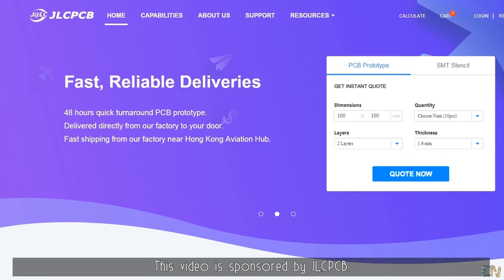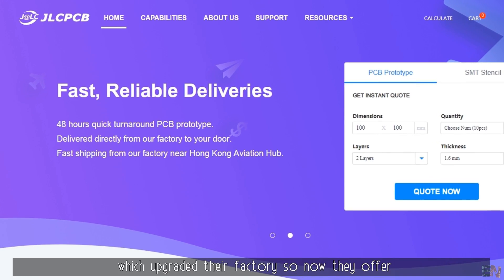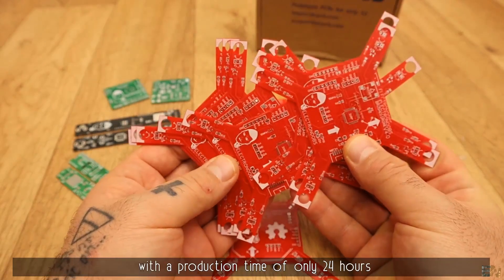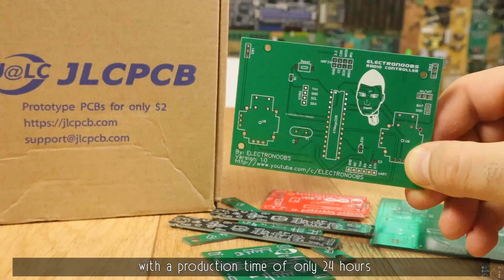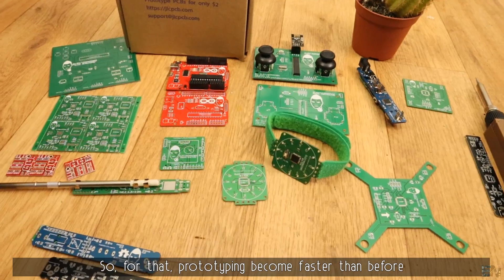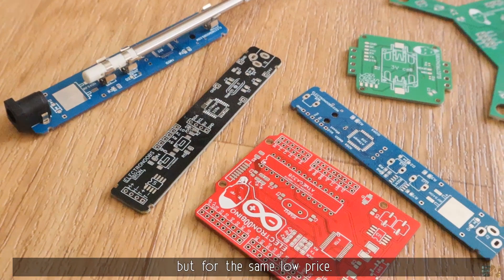This video is sponsored by JLCPCB, which upgraded their factory so now they can offer 5 pieces of common 2-layer PCBs with a production time of only 24 hours and that without any additional fees. So for that, prototyping becomes faster than before but for the same low price.